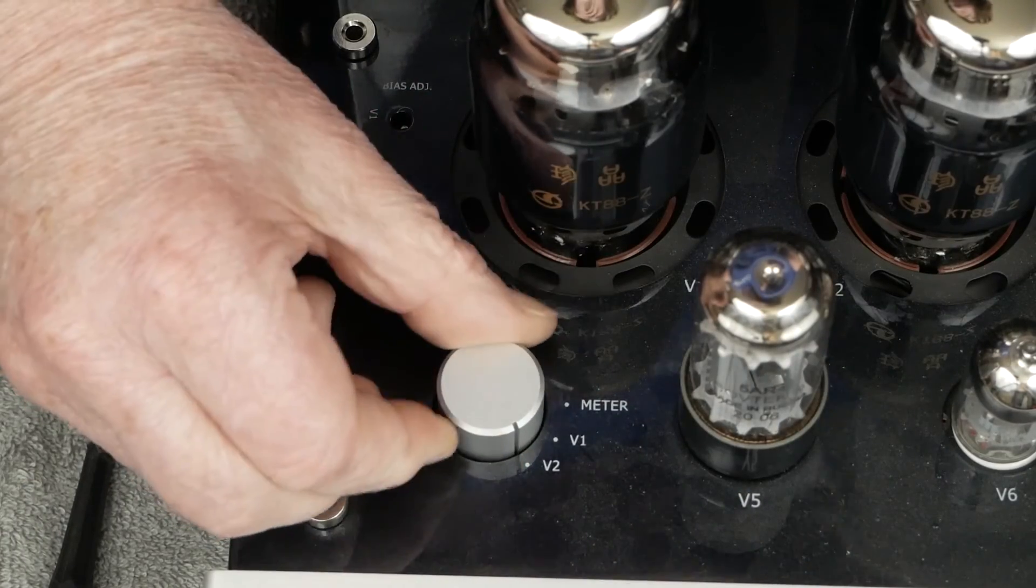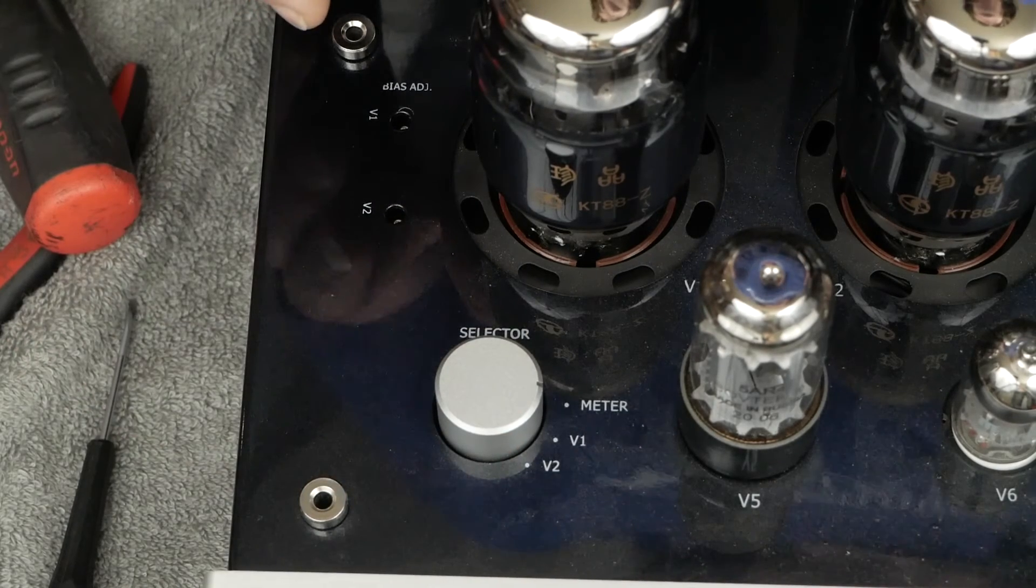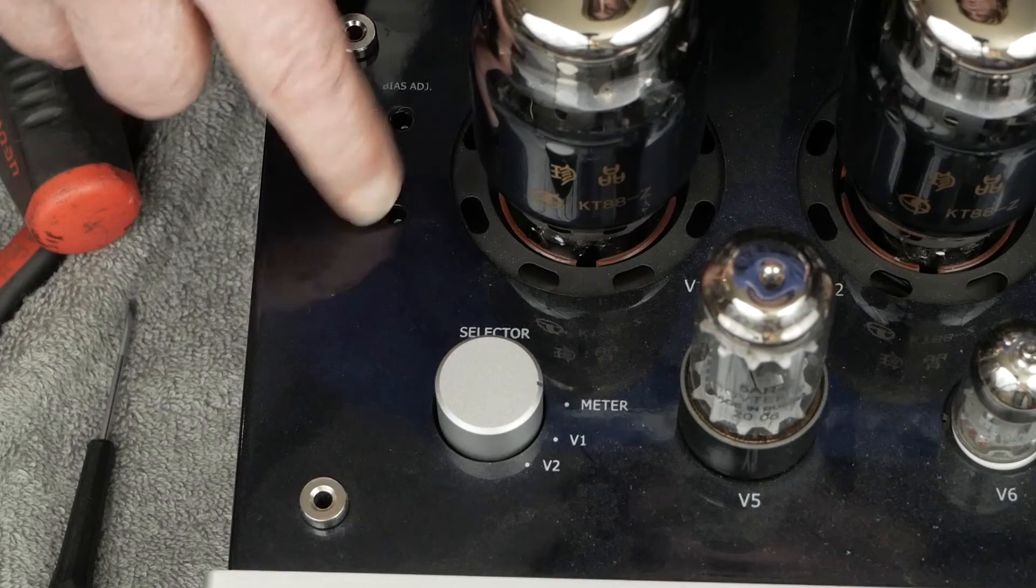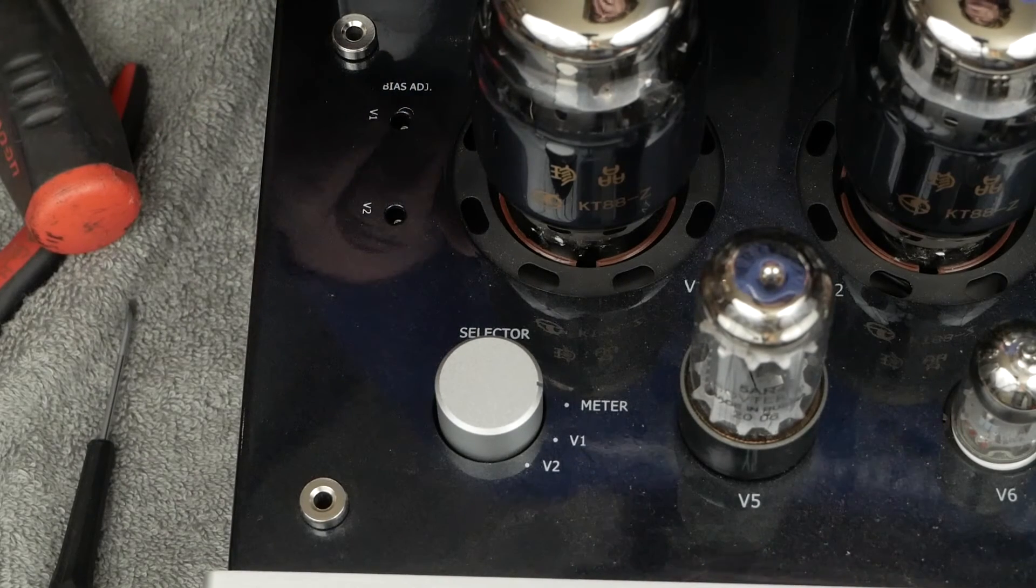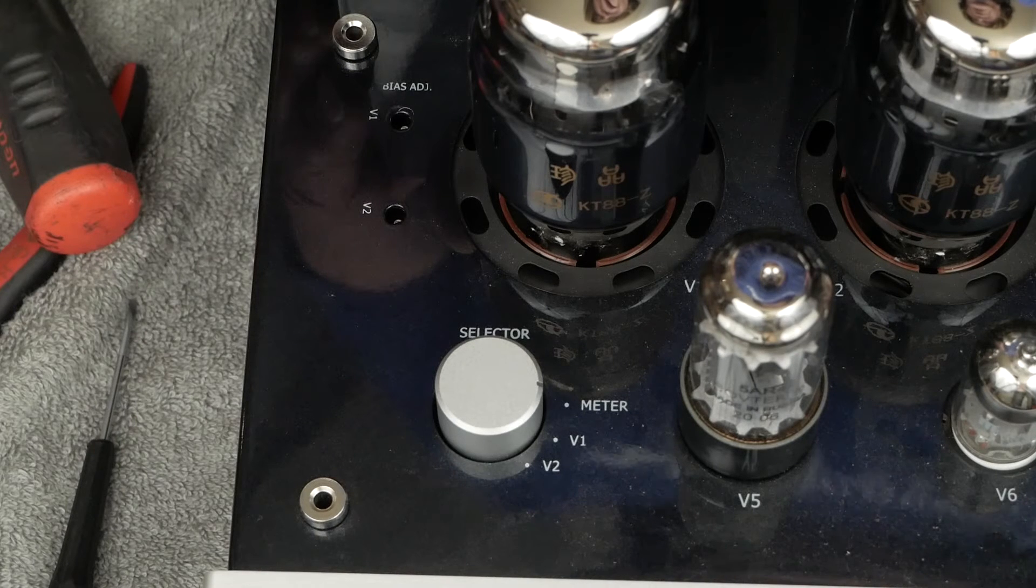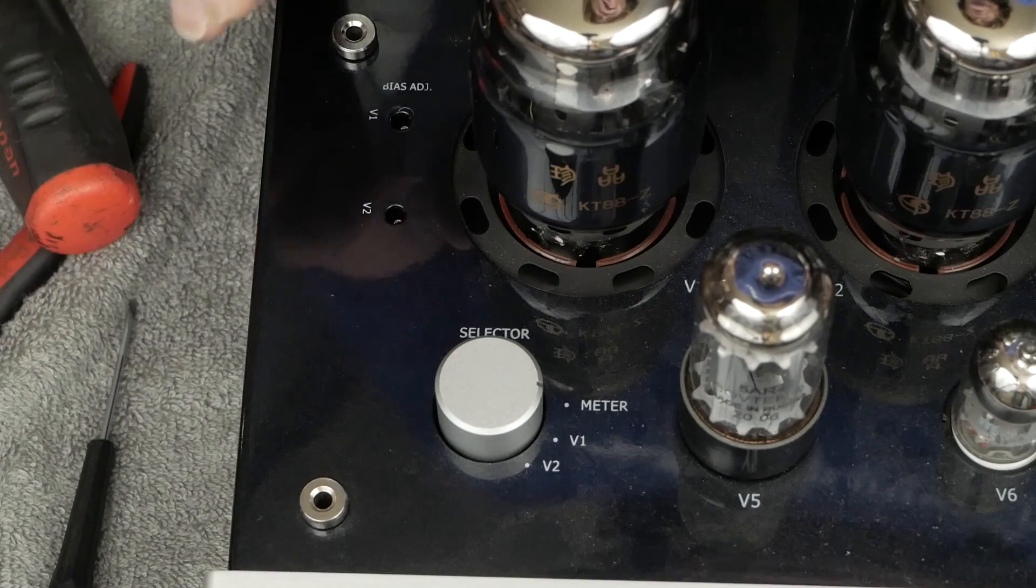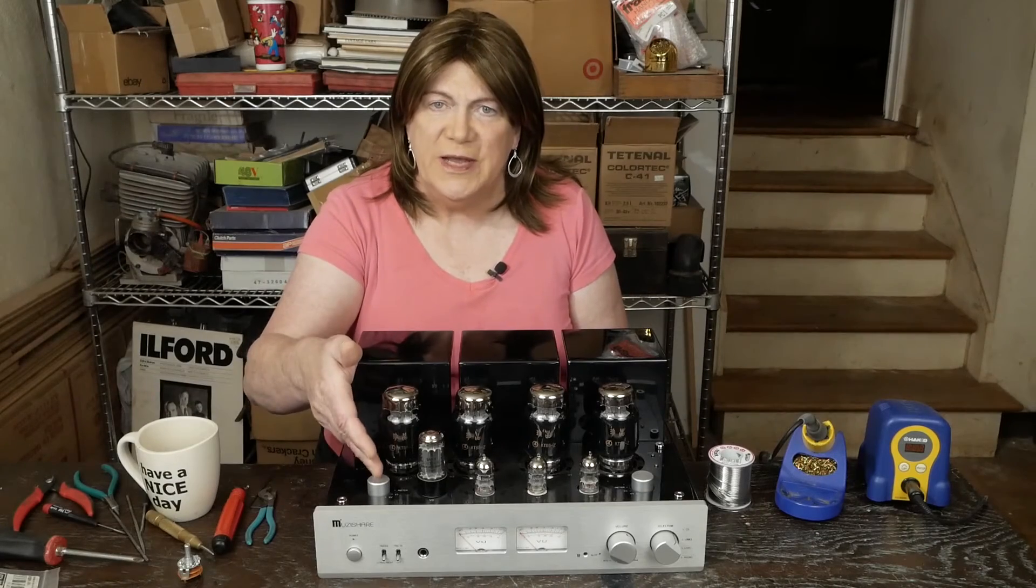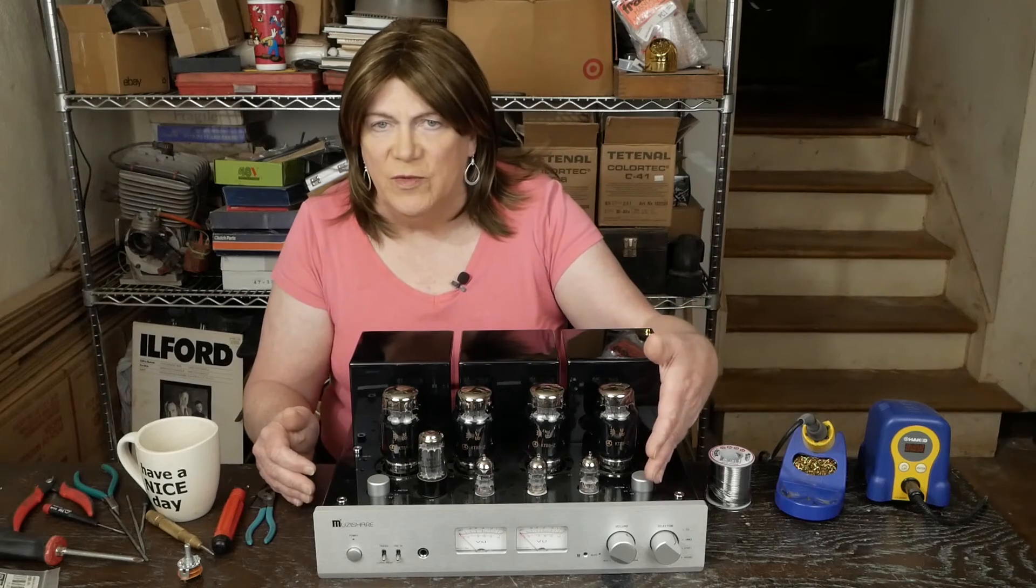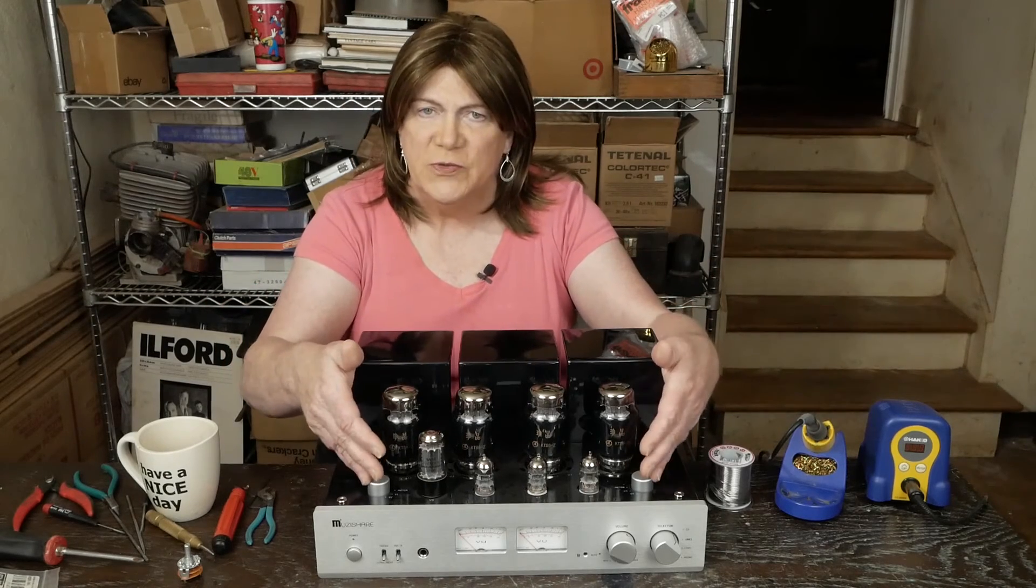So the next thing we need to do is work on replacing these bias pots with some much higher quality potentiometers so that we don't have issues with the bias from them failing. So we got these rotary switches fixed. Did this one on camera for you guys. I'd done the other one before just to kind of get a feel for it. So we got two new rotary switches in this thing.